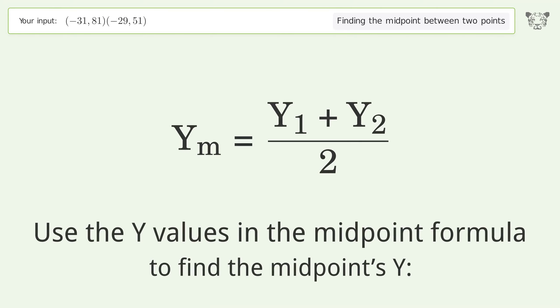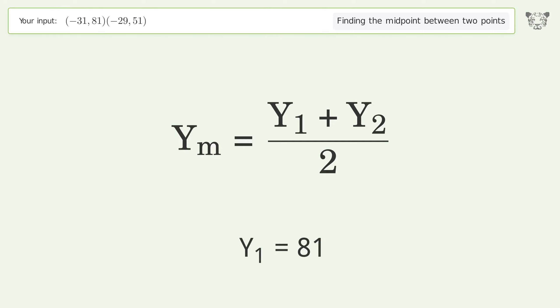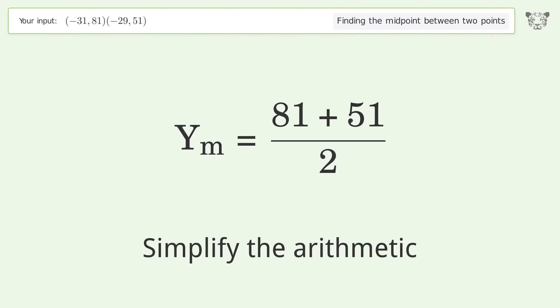Use the y values in the midpoint formula to find the midpoint's y. y1 equals 81, y2 equals 51. Simplify the arithmetic.